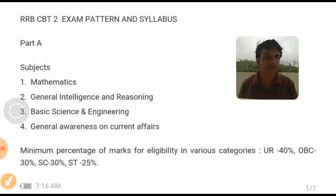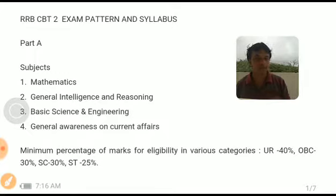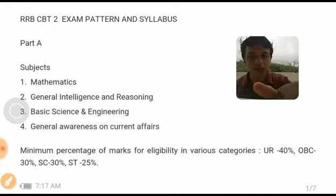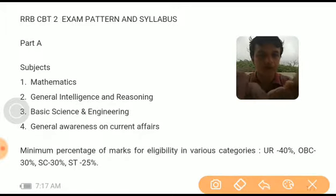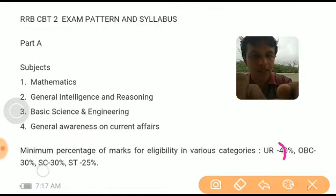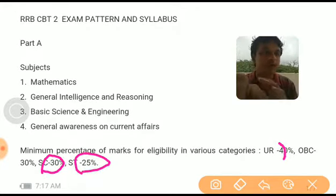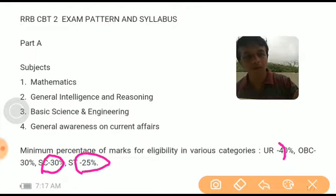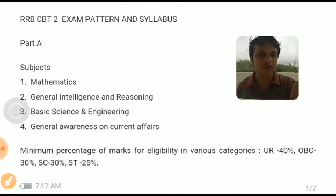Negative marking is present — one-third marks will be deducted for wrong answers. Whereas in the computer-based aptitude test, which is for assistant loco pilots in the next round after clearing CBT2, there is no negative marking. The minimum qualifying mark for Part A is: unreserved — 40%, OBC — 30%, SC — 30%, ST — 25%. However, do not aim just for the qualifying marks; go for higher marks. Whereas in Part B, it is enough to get the qualifying marks to be selected for the next round.